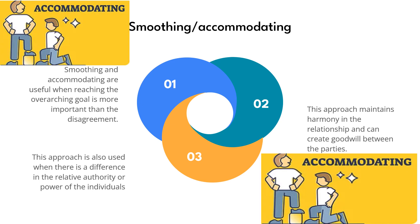Example 2: Resource allocation. Imagine two project managers within an organization vying for the same highly skilled team member whose expertise is crucial for both projects. In a smoothing, accommodating approach, the project managers collaborate to find a compromise — sharing the resource's time between the two projects, even if it means a slightly adjusted timeline for each. By prioritizing the organization's overall objectives and maintaining a cooperative approach, they avoid conflicts, maintain positive relationships, and ensure both projects move forward effectively. This approach focuses on achieving a harmonious resolution, even if it means making concessions.